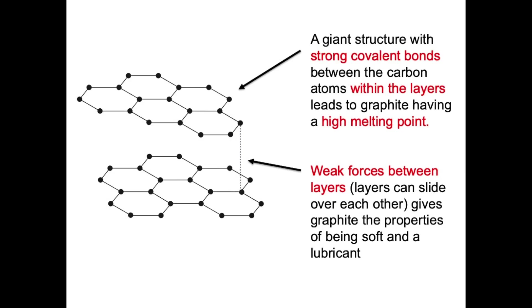Looking at graphite in a little more detail: graphite has hexagonal layers of carbon atoms and the bonding within these layers is very strong. The fact that it has a giant structure and strong covalent bonds within the layers means that graphite has a high melting point. Where it differs from diamond is that the bonding is not strong in all directions — there are weak forces between the layers and these layers can slide over each other, which gives graphite its lubricating properties and means that graphite is very soft, unlike diamond.